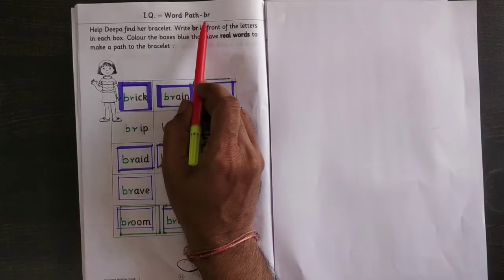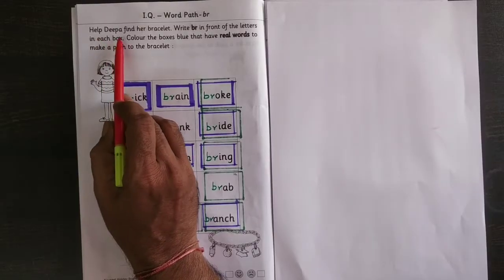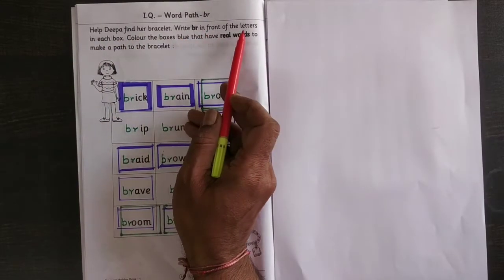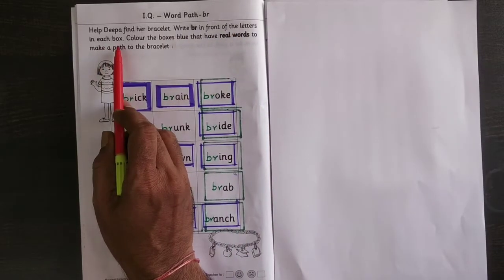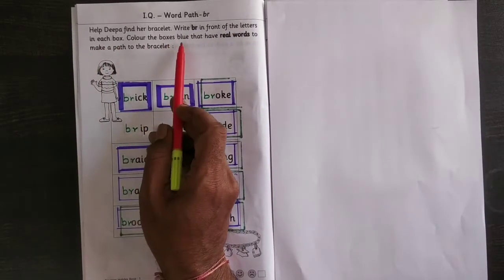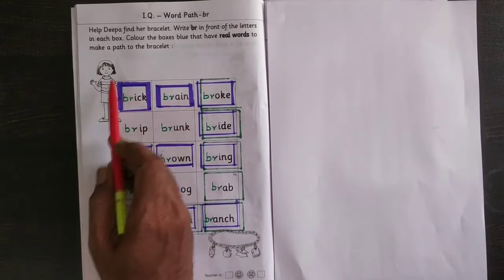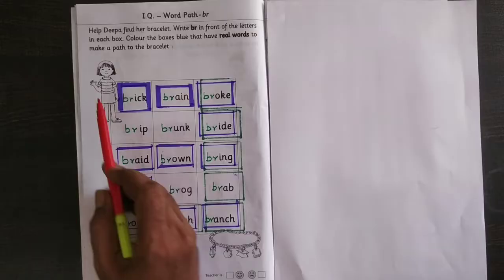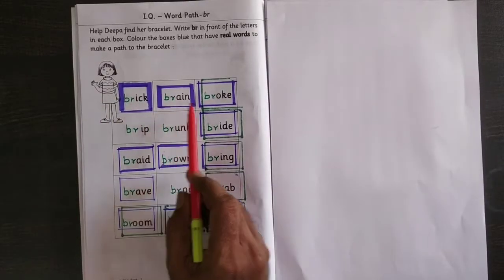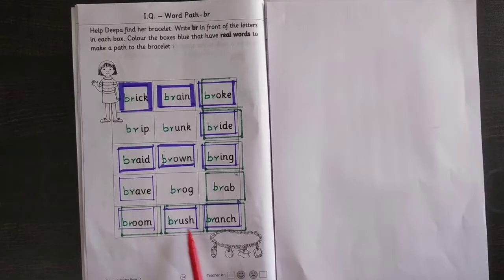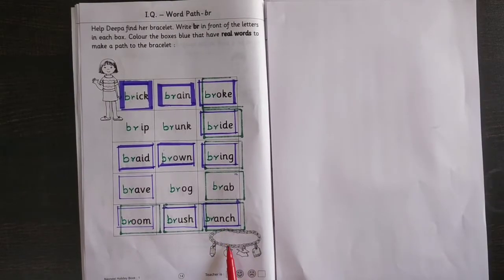Word path BR: Help Deepa find a bracelet. Write BR in front of the letters in each box. Color the boxes blue that have real words to make a path to the bracelet. Here Deepa is there, and these are the words which help Deepa to get the path to go to the bracelet.